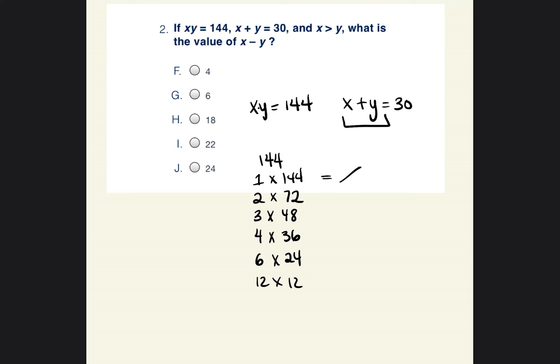So when you add 1 plus 144, that's not 30. 72 plus 2, that's not equal to 30. 48 plus 3 is not equal to 30. 36 plus 4 is not equal to 30. 6 plus 24, that is equal to 30. So we found what x and y could be.